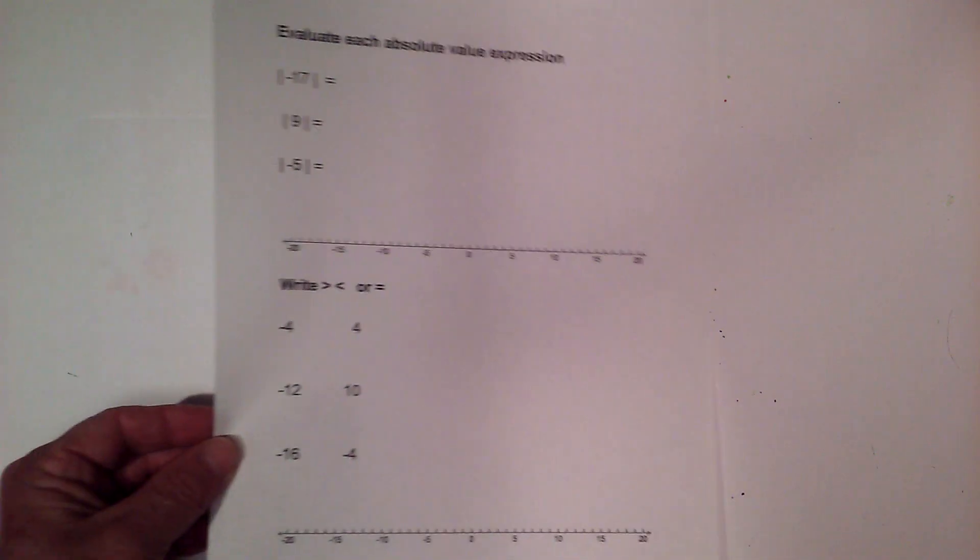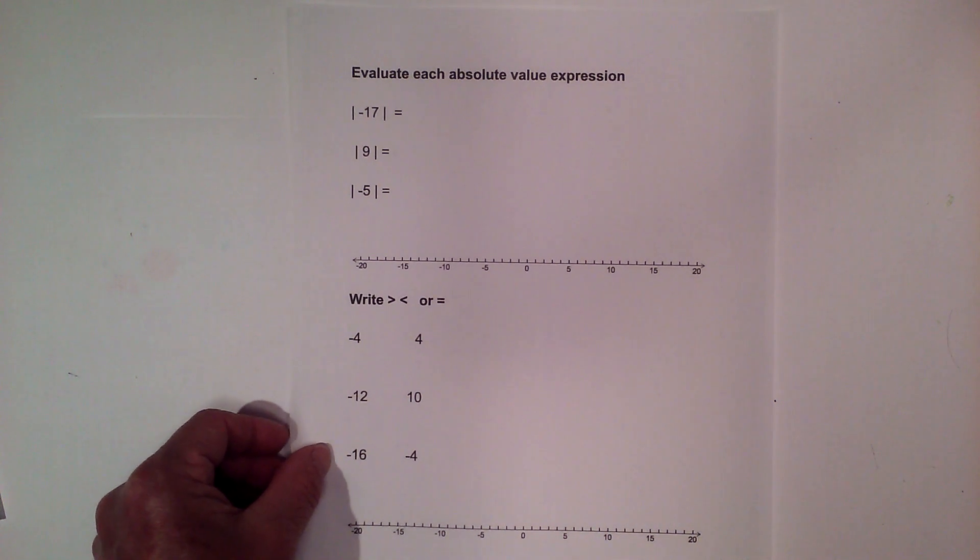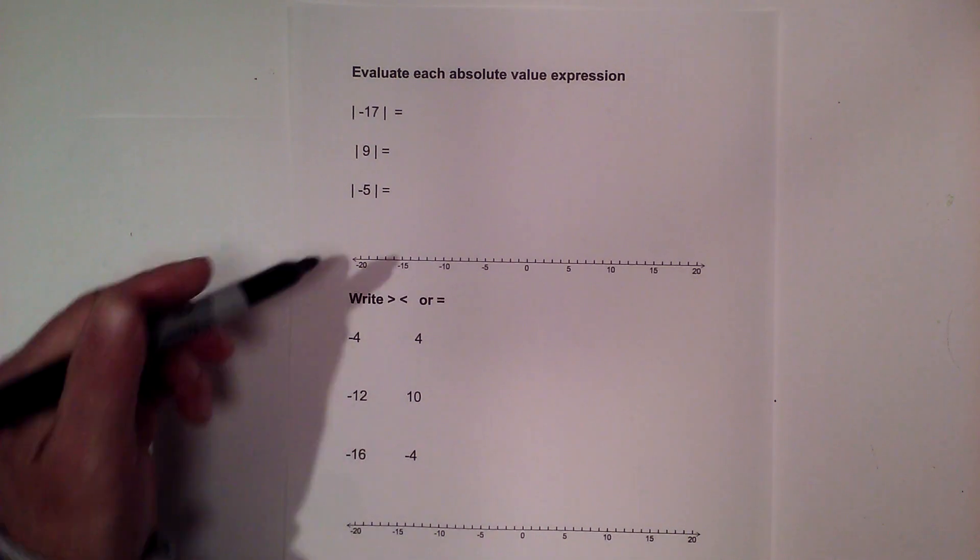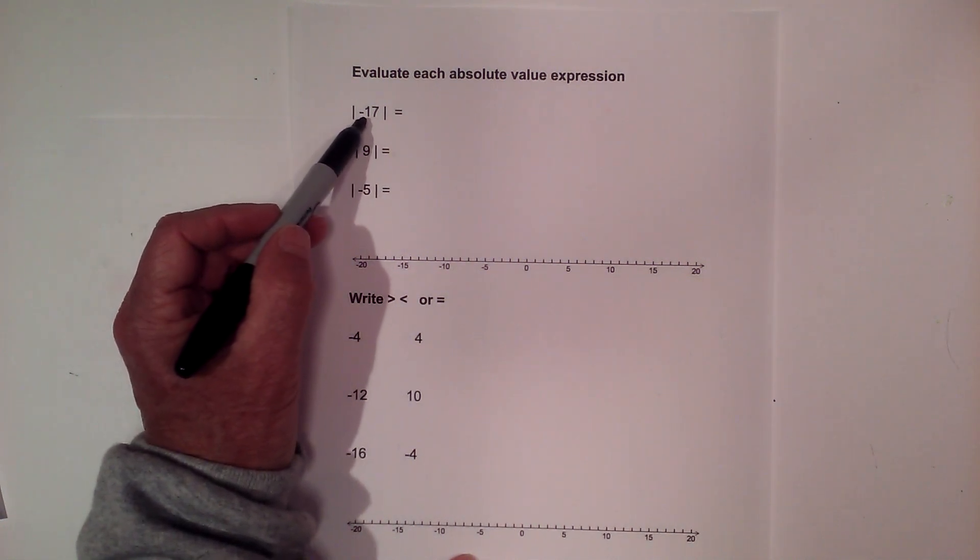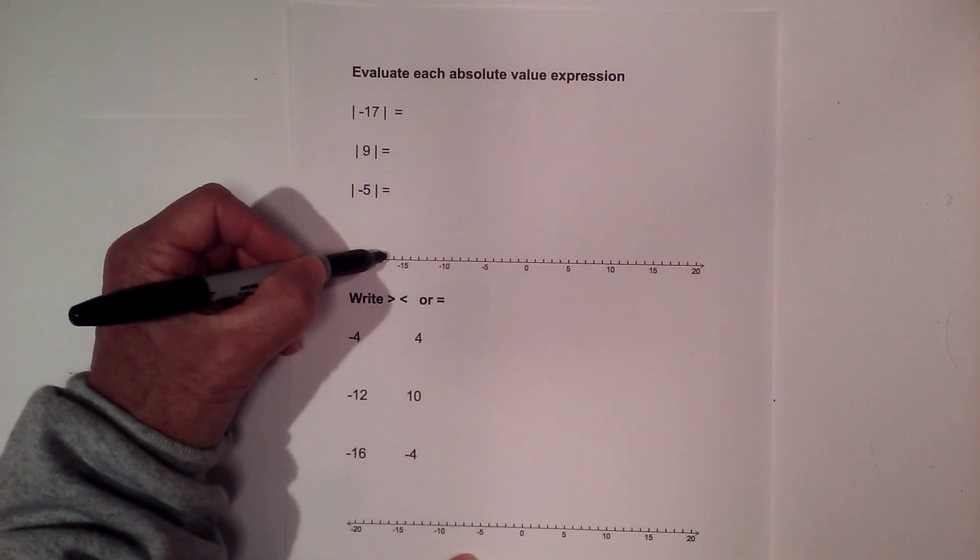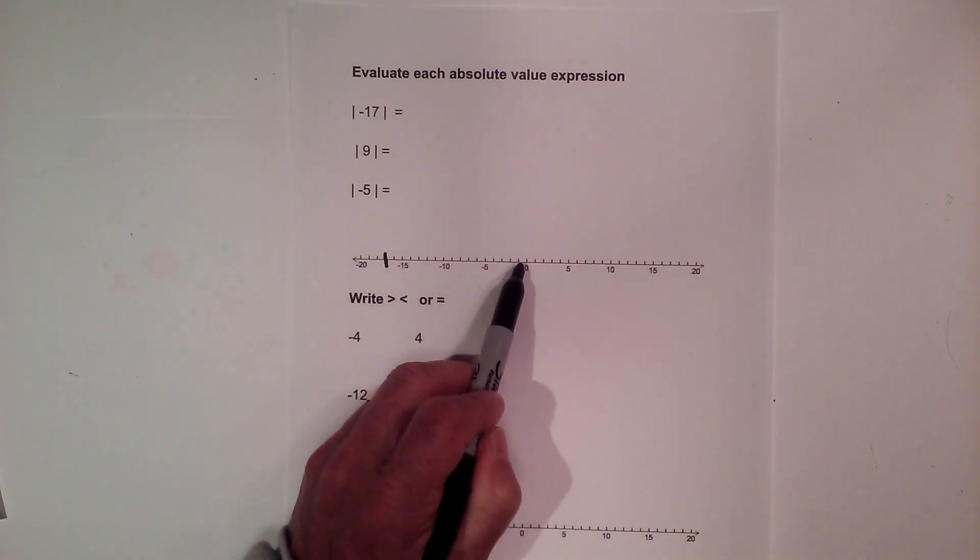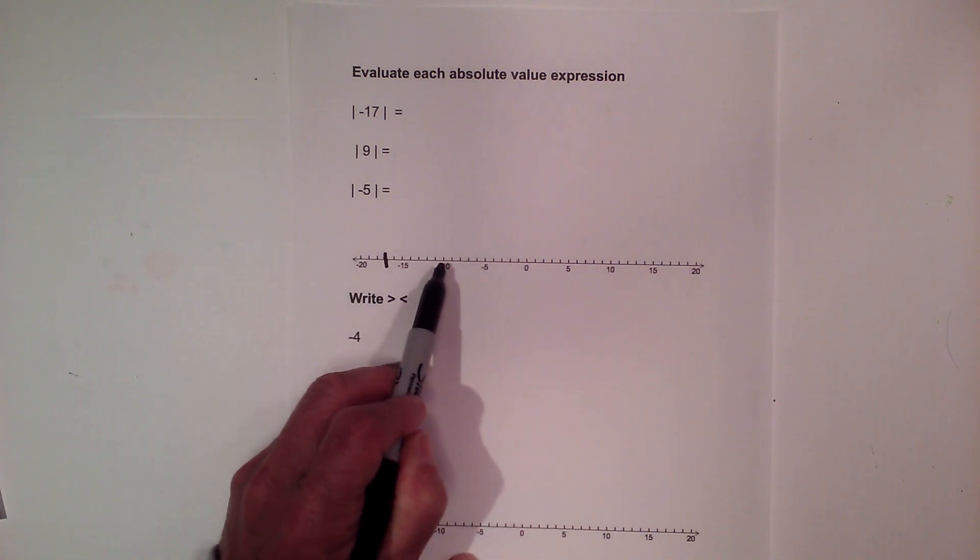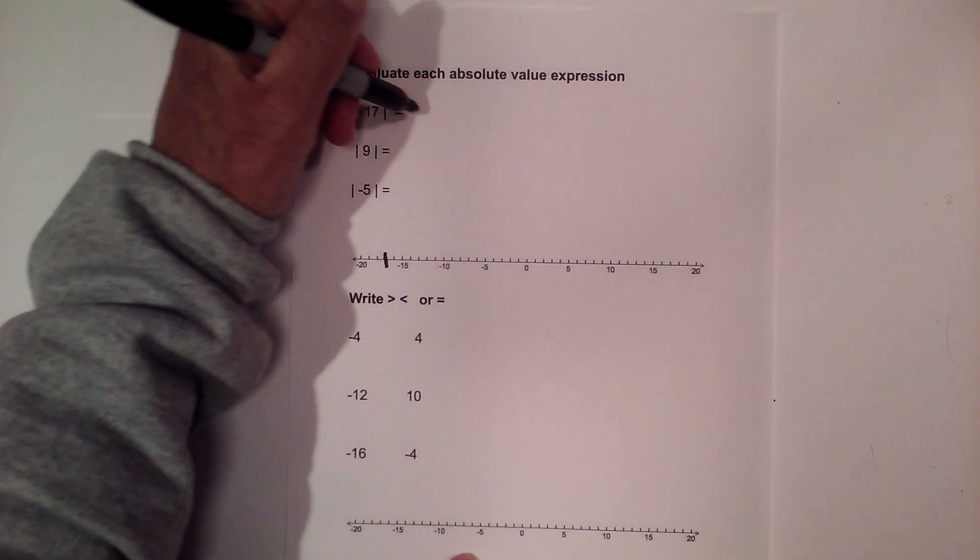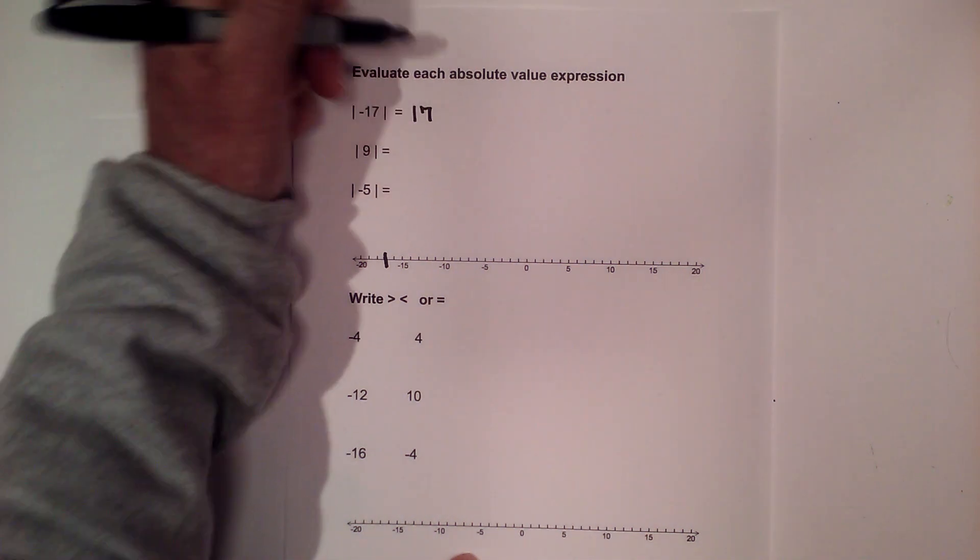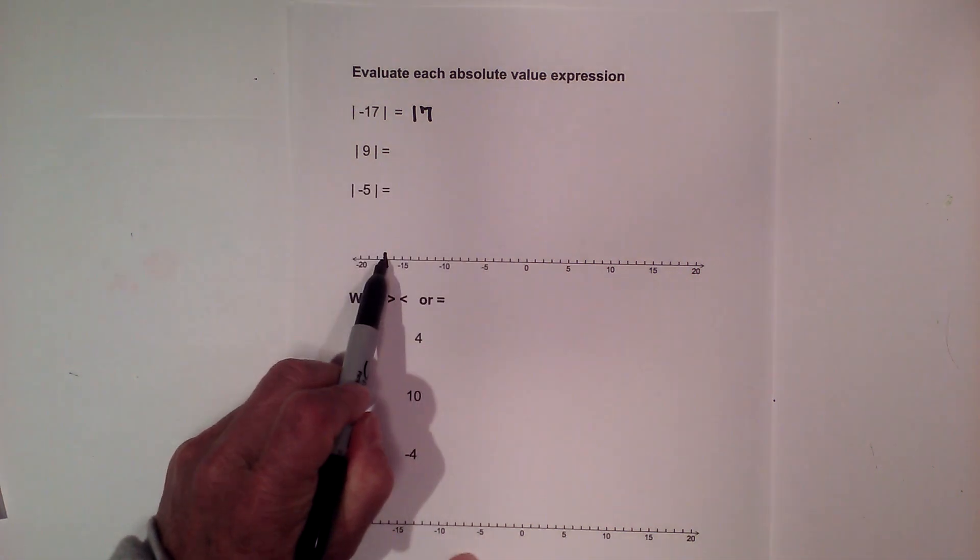Next, let's evaluate the absolute value expression. It is very similar. Whenever we see these brackets, that is absolute value. It's just the distance, or the number of units away from zero. So negative 17 is right here, and if we count, there are 17 units from zero to 17. There's 5, 10, 15, 16, 17. So the absolute value of negative 17 is 17, because it's 17 units away from zero.